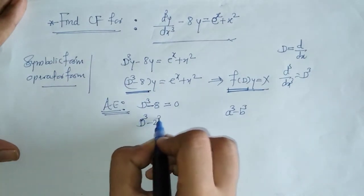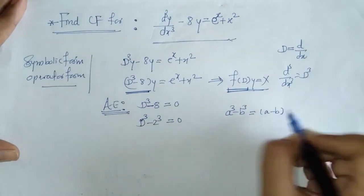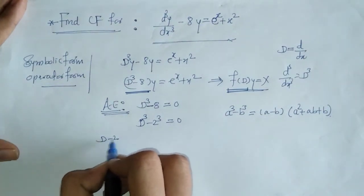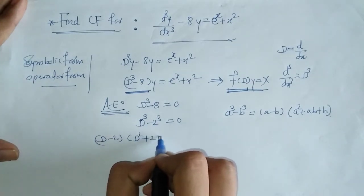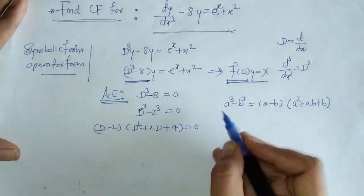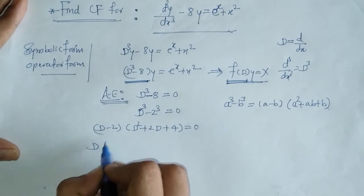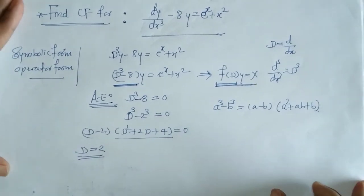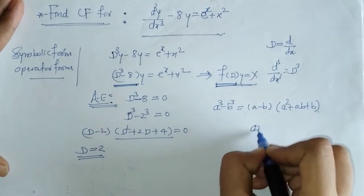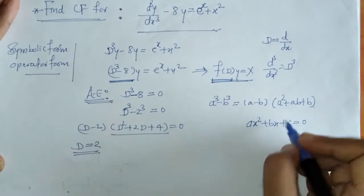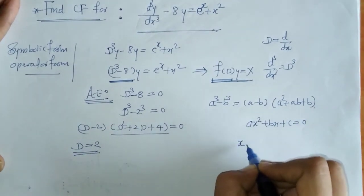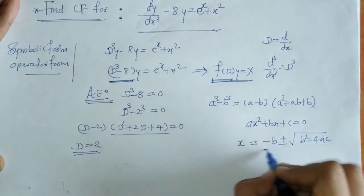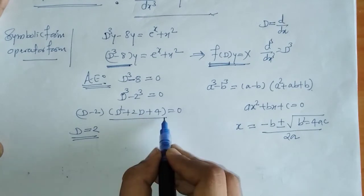So we can write this using the factorization we know for a³ - b³. We write it down so that we can find its roots. Now we have D = 2, and we have to find the roots of the remaining quadratic equation. We know that for any quadratic equation of this form, the root value of x is given by the quadratic formula.